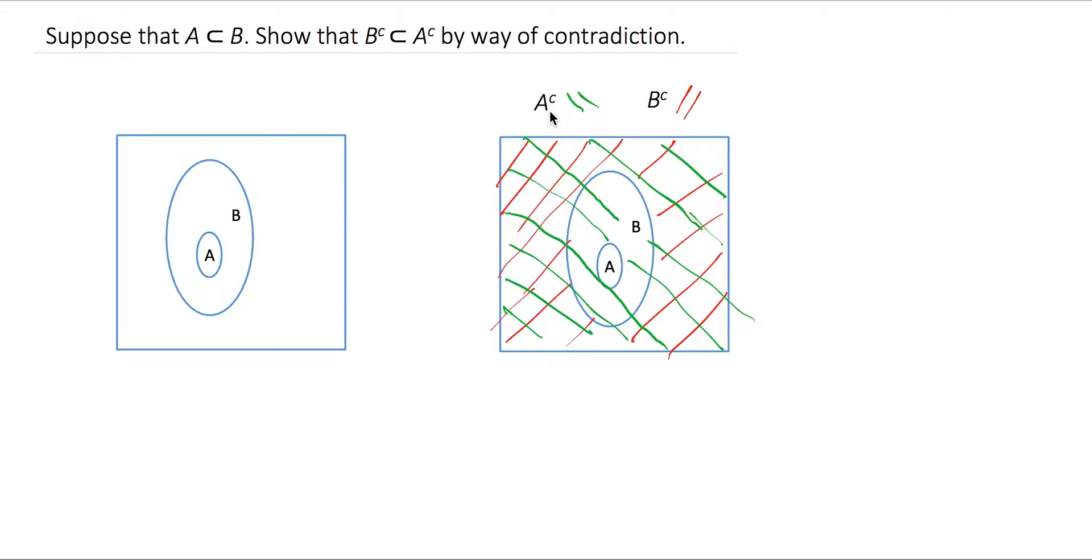On the opposite side we have A complement, which I've drawn with green lines here, and B complement, so you can see that B complement is contained in A complement. A complement has all of this extra space on this Venn diagram that contains all of B plus more of A. So we can see that A complement covers all of B complement plus some more.